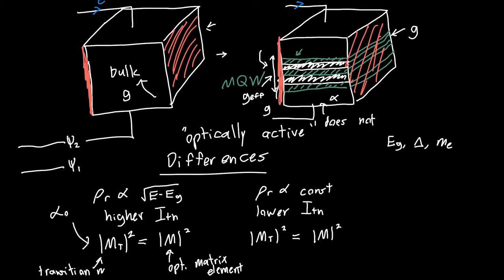So in the bulk case they were the same. In the quantum well case they're going to be different. So mt is equal to, or magnitude mt squared is equal to magnitude m squared, which is what mt was in the bulk case.